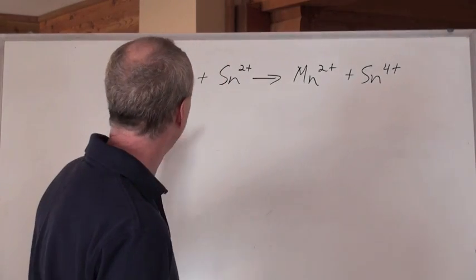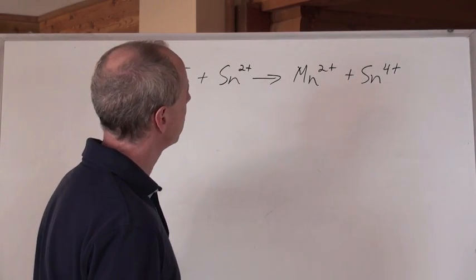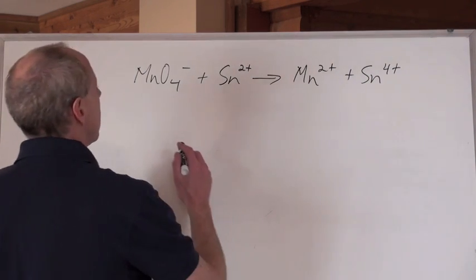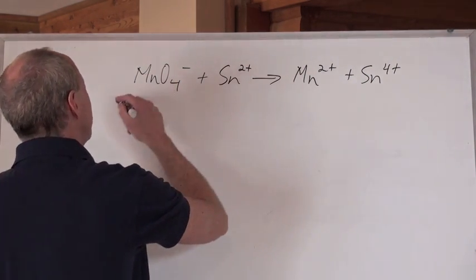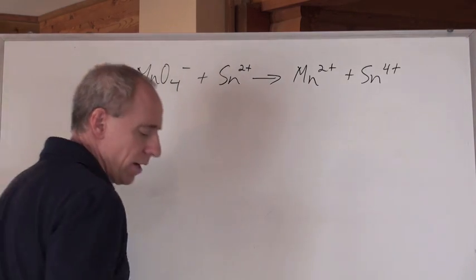Balance that reaction. Well, the thing is though, you're going to look at it and say, chem guy, I'm kind of stuck, because I see the tins and I see the manganese, but I don't see no oxygen on the right hand side.